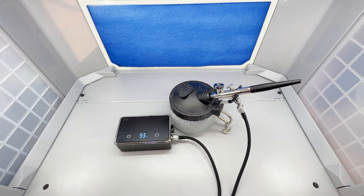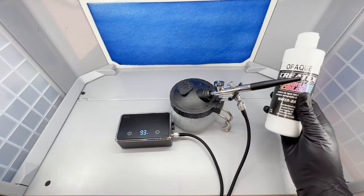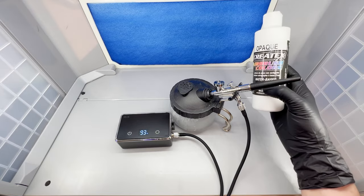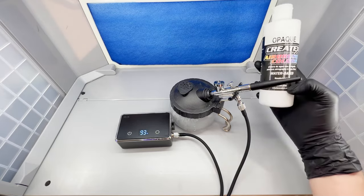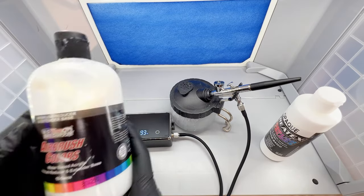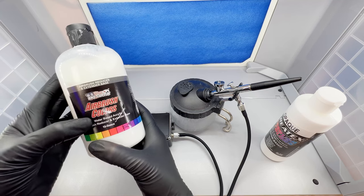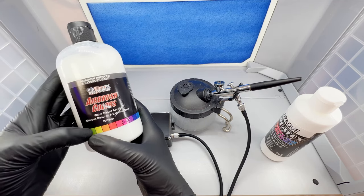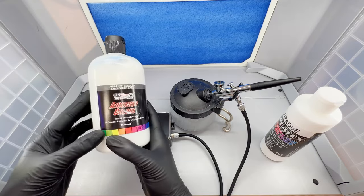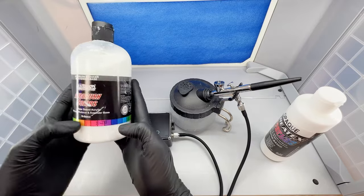I also picked up some paint. Today we're going to be using this Createx airbrush color. This is a water-based acrylic airbrush paint. I also picked up this US Art Supply water-based acrylic extender which will help extend the color and help it run through the machine a bit better.